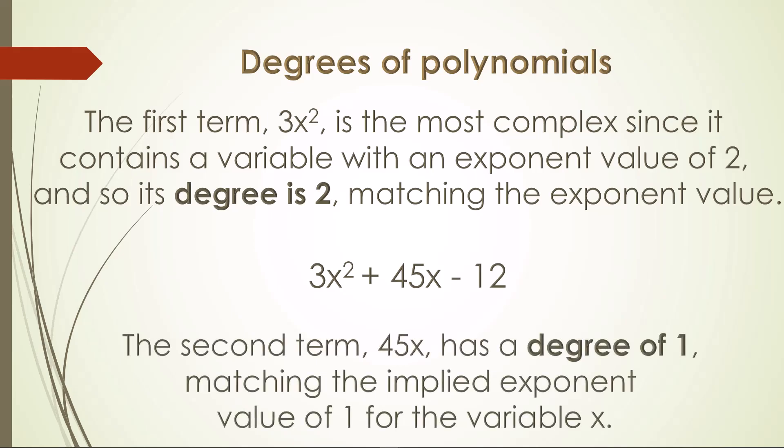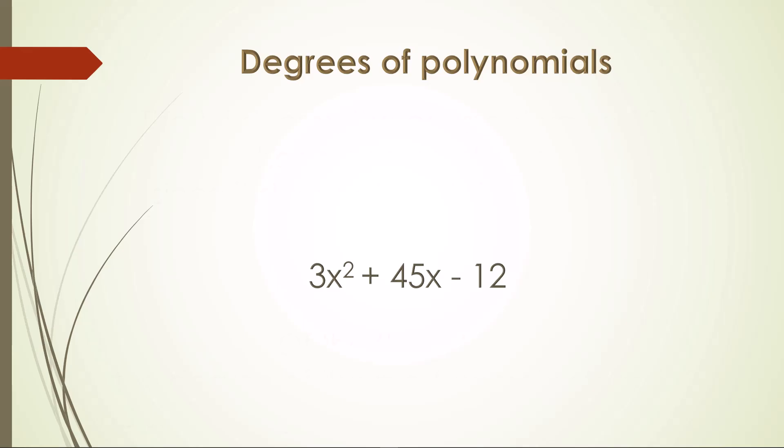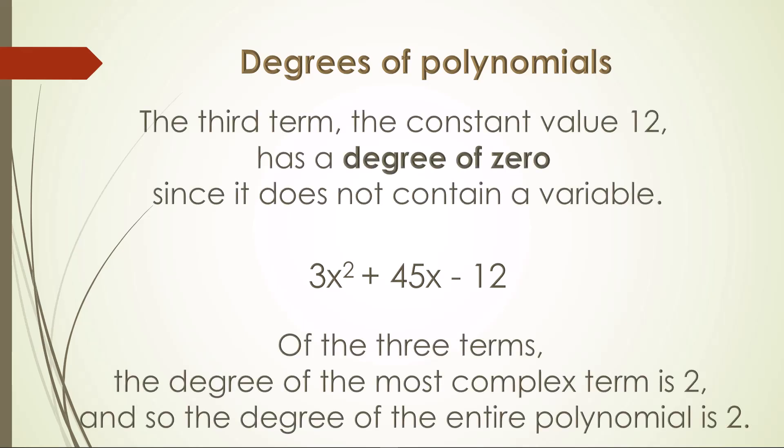The second term, 45x, has a degree of 1, matching the implied exponent value of 1 for the variable x. The third term, the constant value 12, has a degree of 0, since it does not contain a variable.